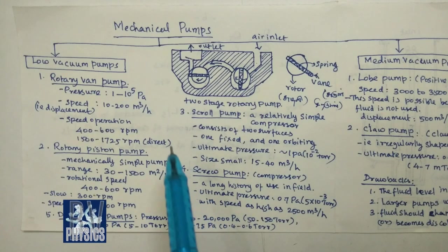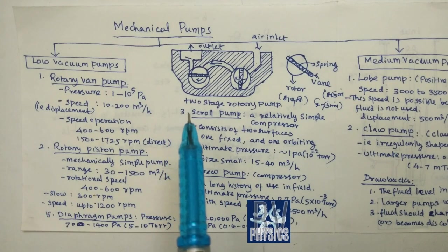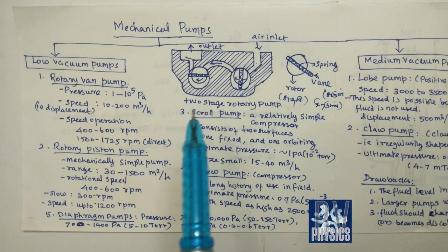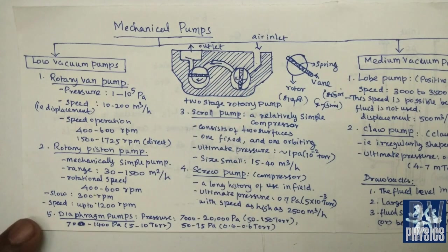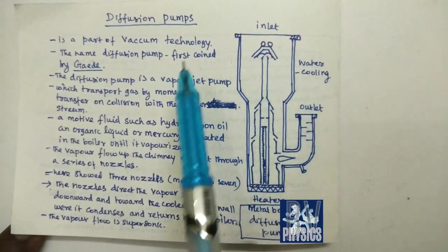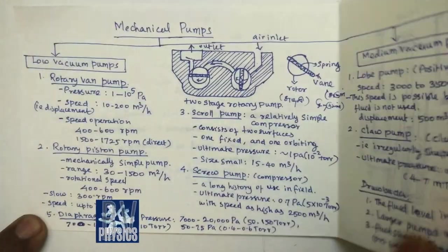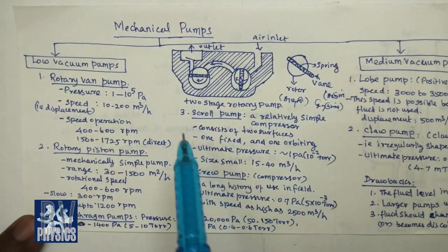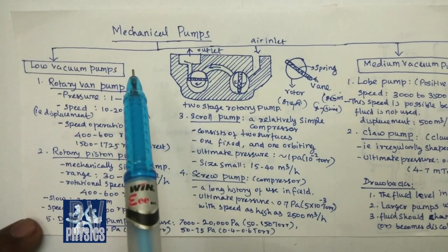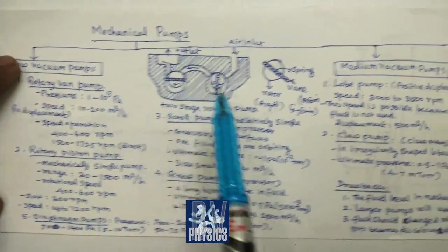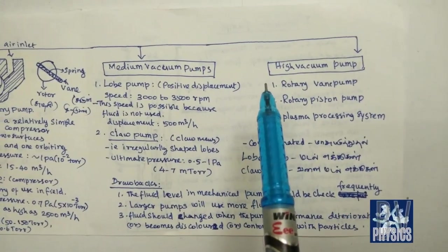Now we will see the classifications of vacuum pump. There are two major categories: mechanical pump and diffusion pump. First, we will see mechanical pump. There are three stages of mechanical pump: low vacuum pump, medium vacuum pump, and high vacuum pump.